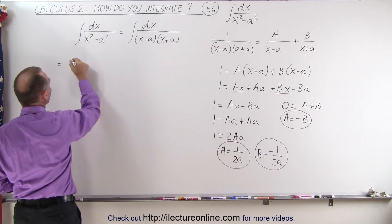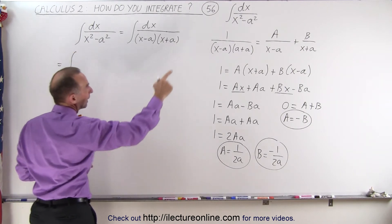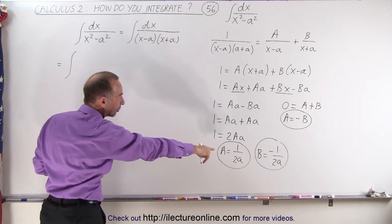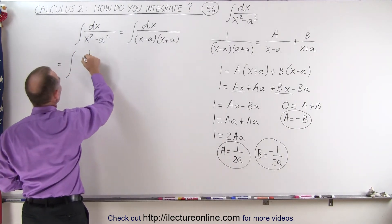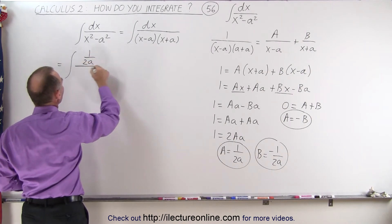This becomes equal to the first integral of A over x minus a, which is 1 over 2a. So 1 over 2a divided by x minus a.